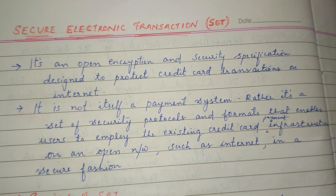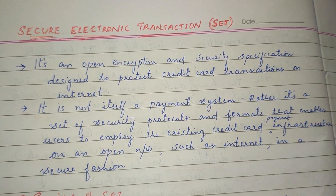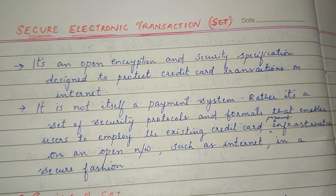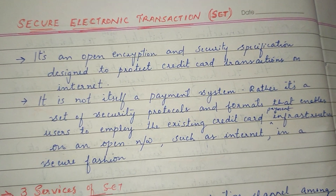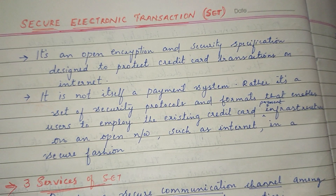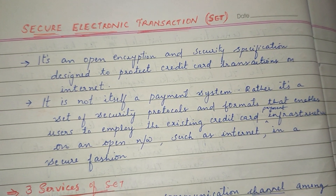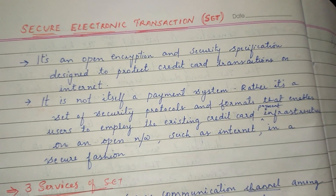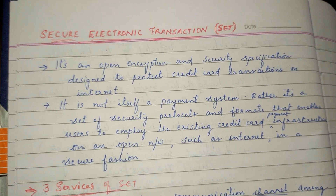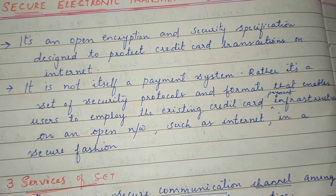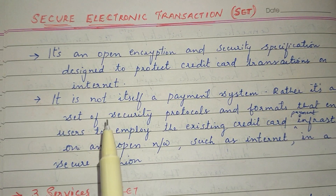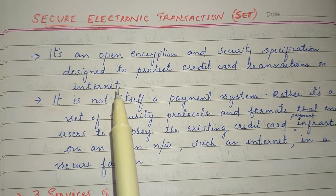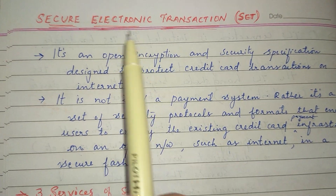This SET is a group of security protocols and formats. Now, the payment infrastructure is embedded in the internet for existing transactions. Payment infrastructure is embedded. This is a set of security protocols.